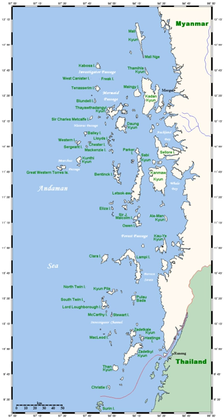An archipelago, sometimes called an island group or island chain, is a chain, cluster or collection of islands, or sometimes a sea containing a small number of scattered islands.